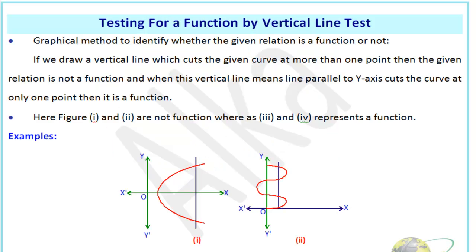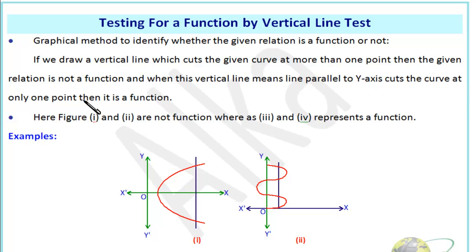Now, given a graph, how do we determine whether it represents a function or not? If we draw a vertical line which cuts the given curve at more than one point, then the relation is not a function. When the vertical line — parallel to the Y-axis — cuts the curve at only one point, then it is a function. This is the vertical line test.